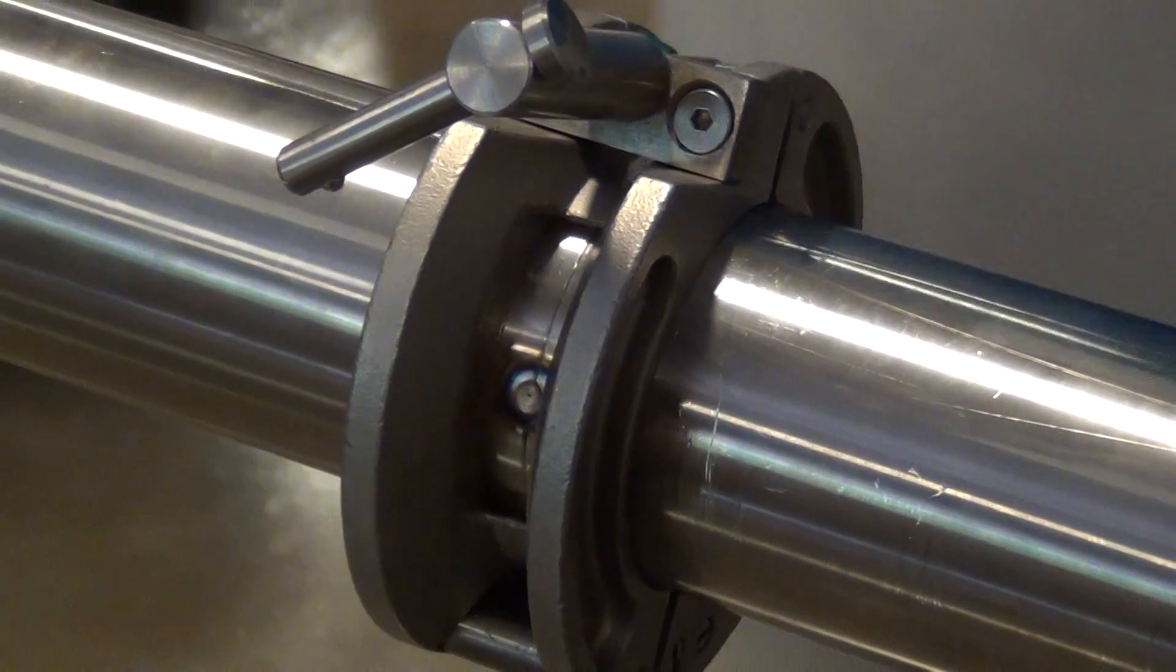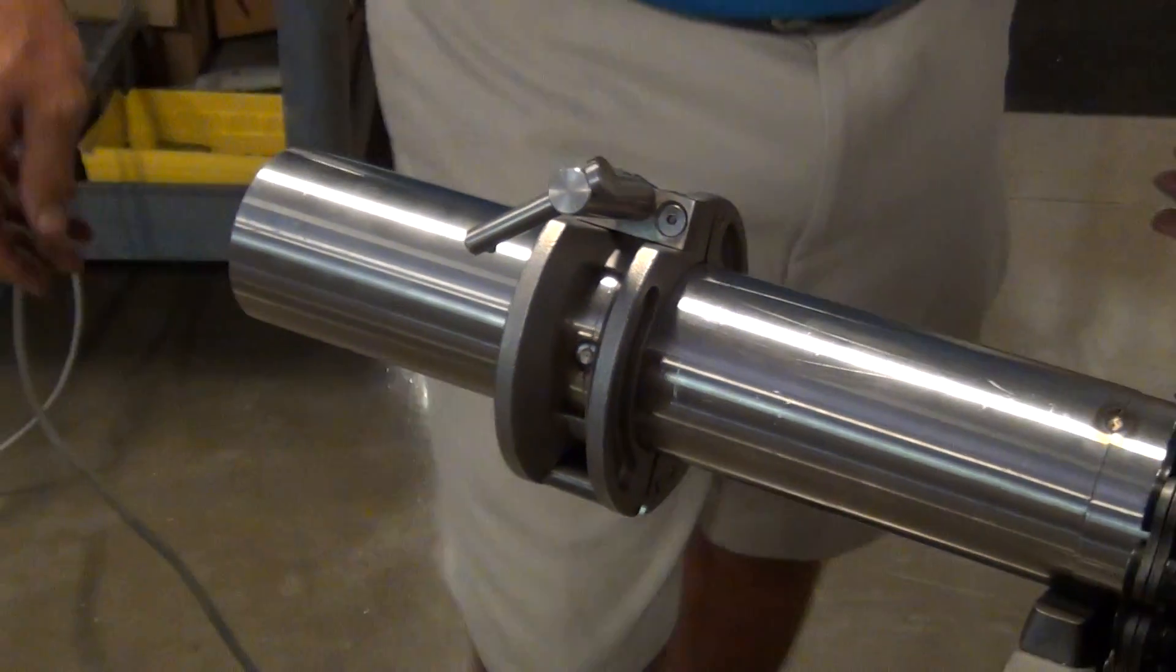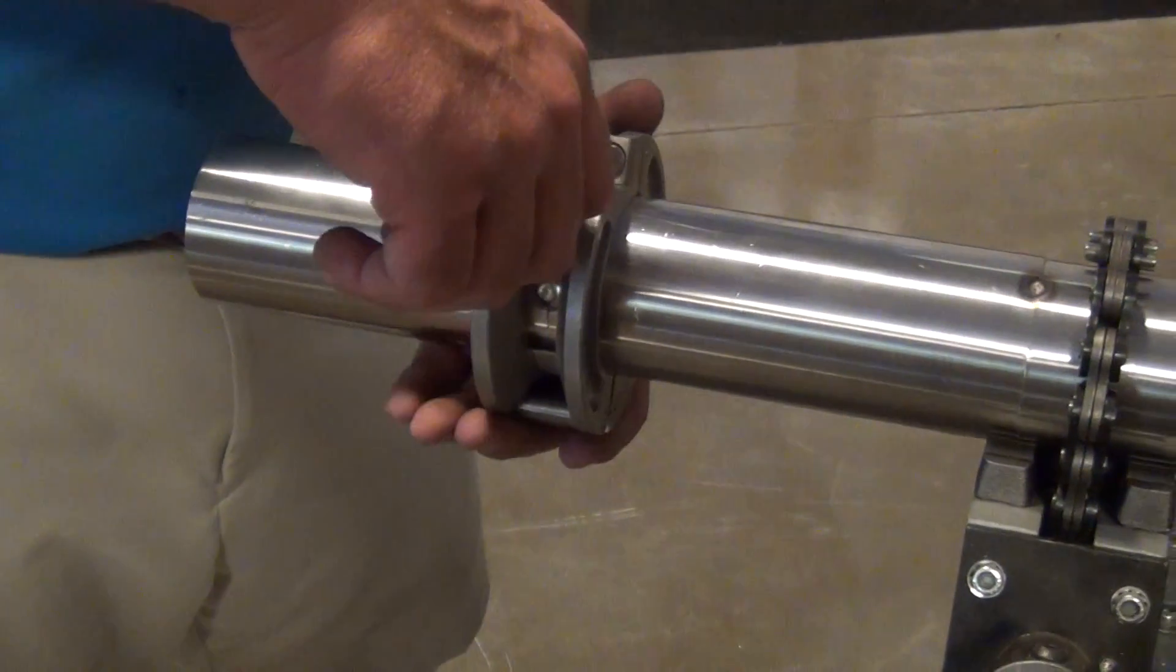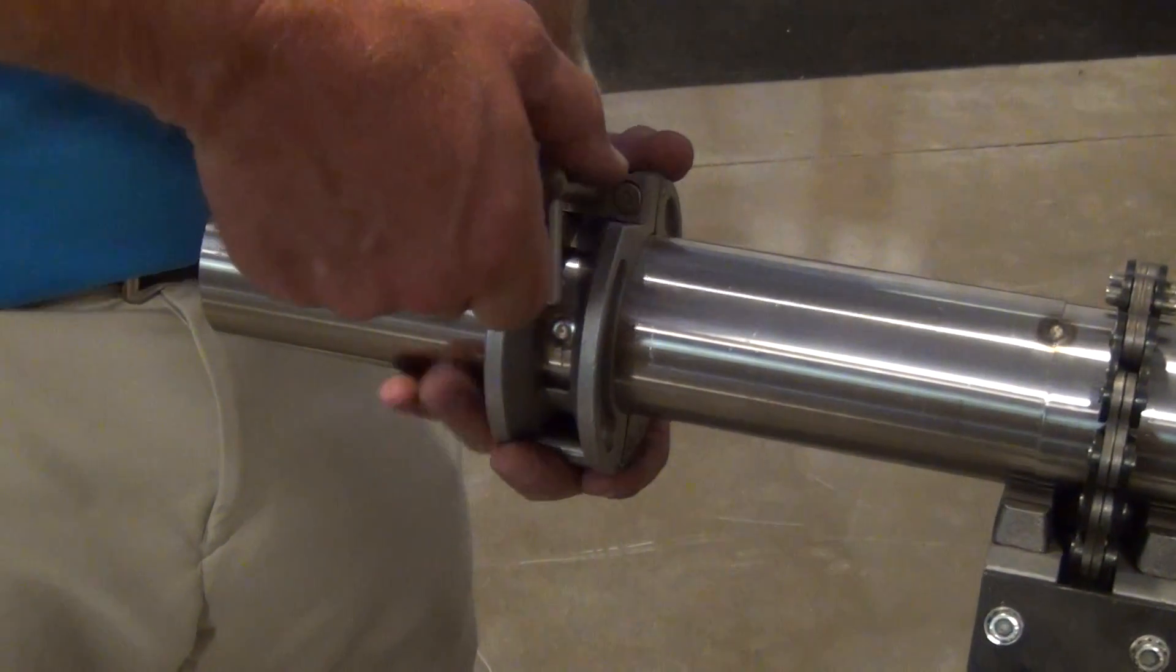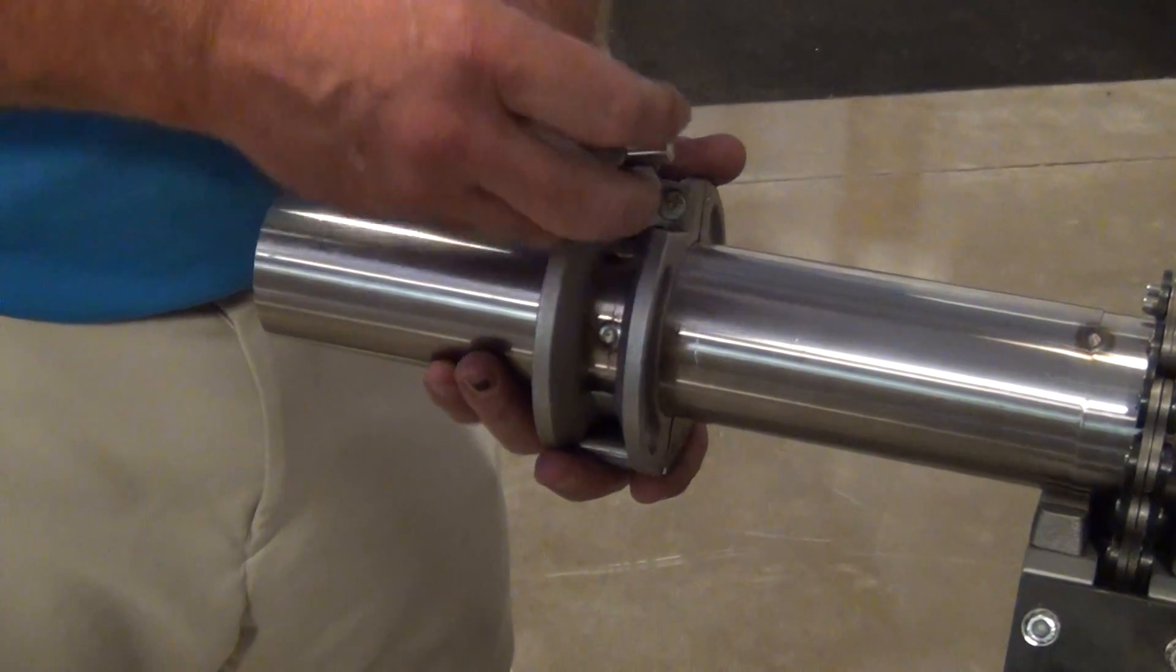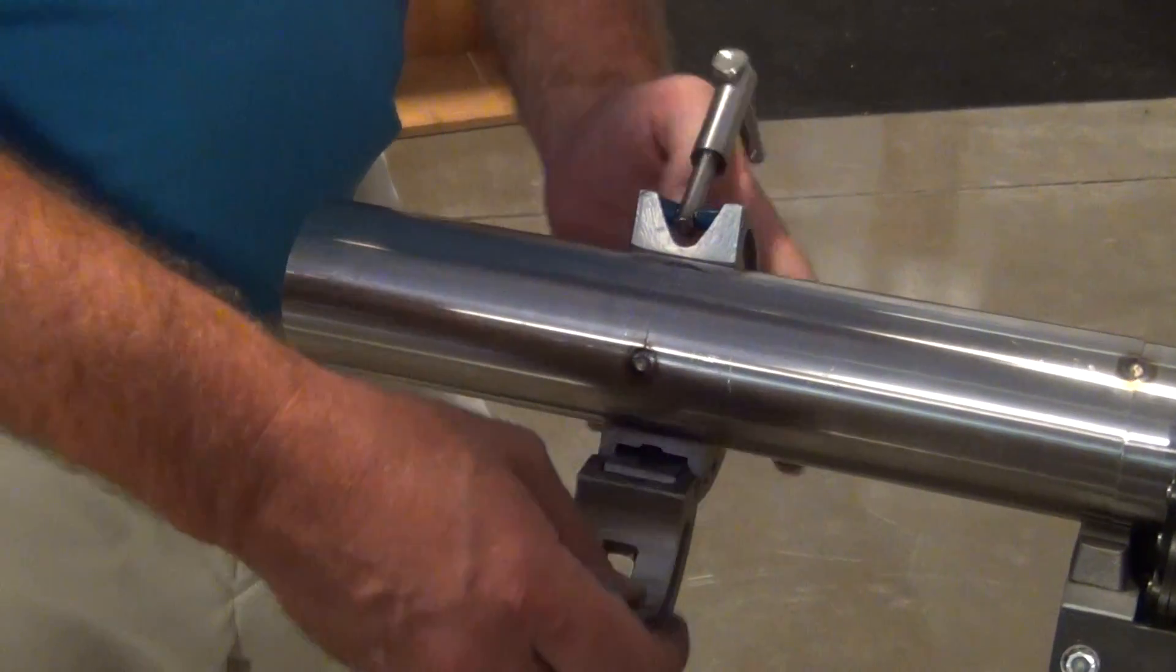Alright, so there you have it. This is two inch sanitary or two and a half inch sanitary. Probably only needs two tacks. As you get larger in diameter, you might want to put four tacks on. You might want to put two on. That's your preference.